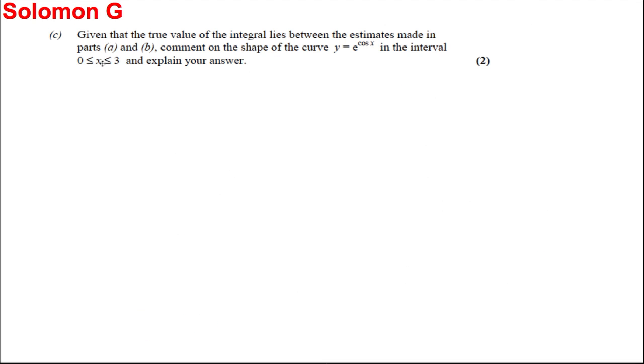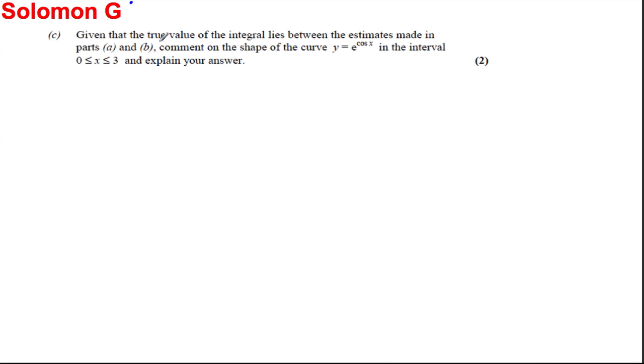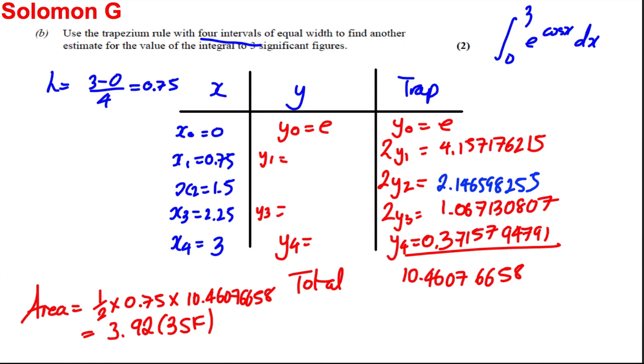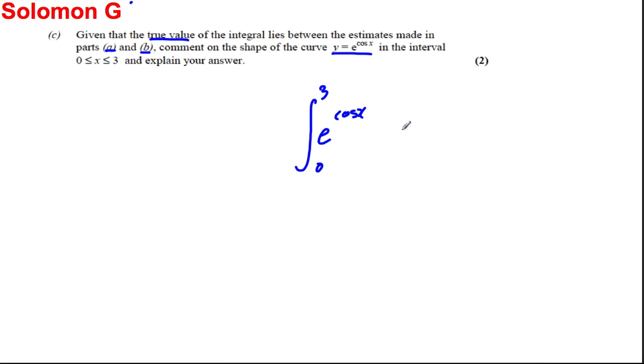Okay, and the last one, we're supposed to use the fact that the true integral actually lies between the answers to part A and part B, and use that to comment on what the curve looks like. So the integral of e to the cos x between 0 and 3 actually lies strictly between 3.92 and 3.93. So it's less than 3.93 and it's bigger than 3.92. Now, 3.92 is when you used 4 trapezia, and this was when you used 2 trapezia.